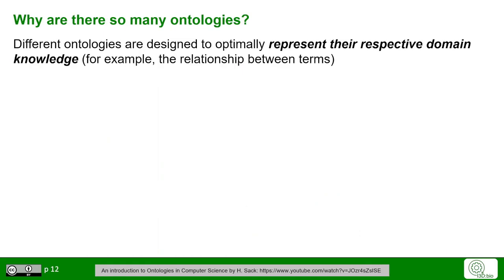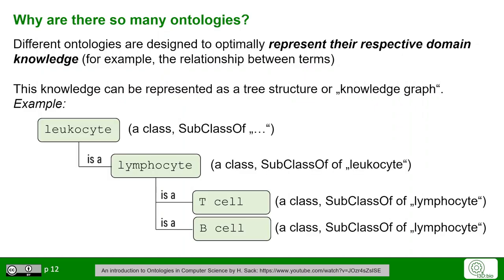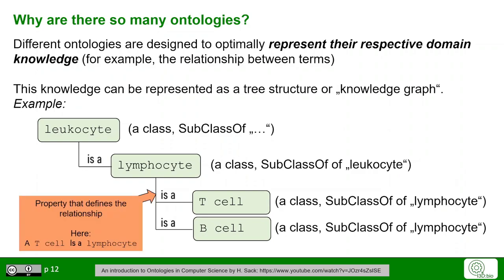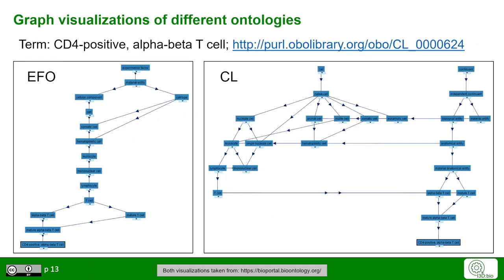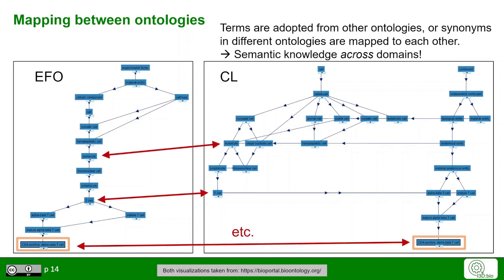Why are there so many different ontologies? Ontologies are designed to optimally represent a specific domain knowledge, and in different domains, different representations might be optimal. Such knowledge can be represented as a tree structure or a knowledge graph, where relationships between classes are clear — for example, a T cell is a lymphocyte, a B cell is a lymphocyte, and any lymphocyte is also a leukocyte. This is a graphical representation of formalized, machine-interpretable knowledge. Terms from different ontologies can be compared; for example, a term may originate from the CELL ontology and be adopted into the EFO ontology, enabling semantic knowledge representation across domains.